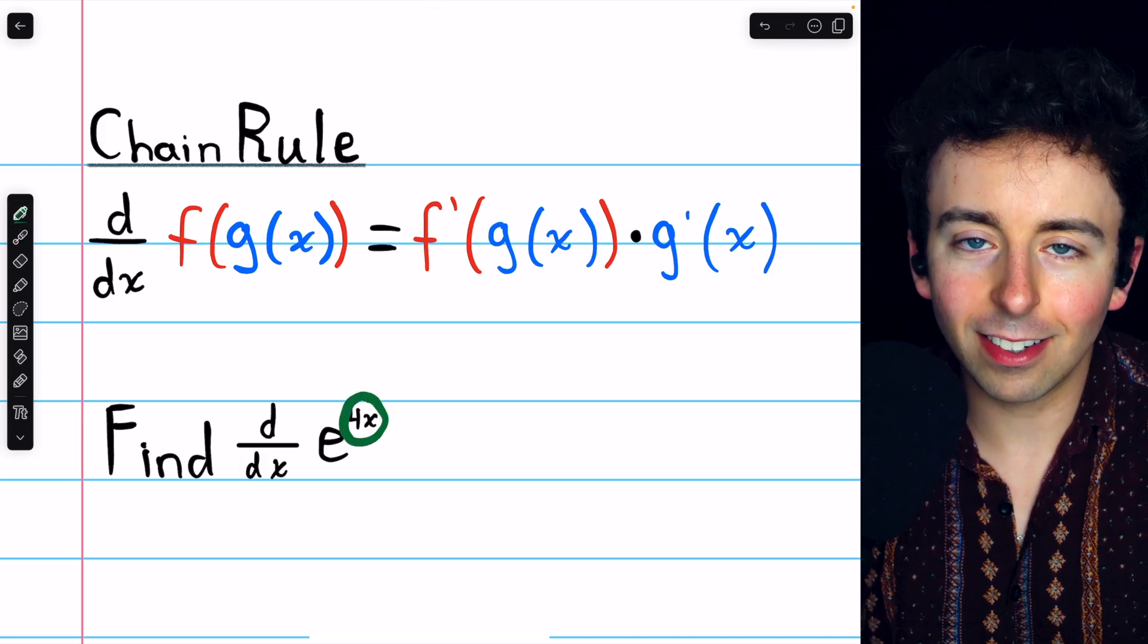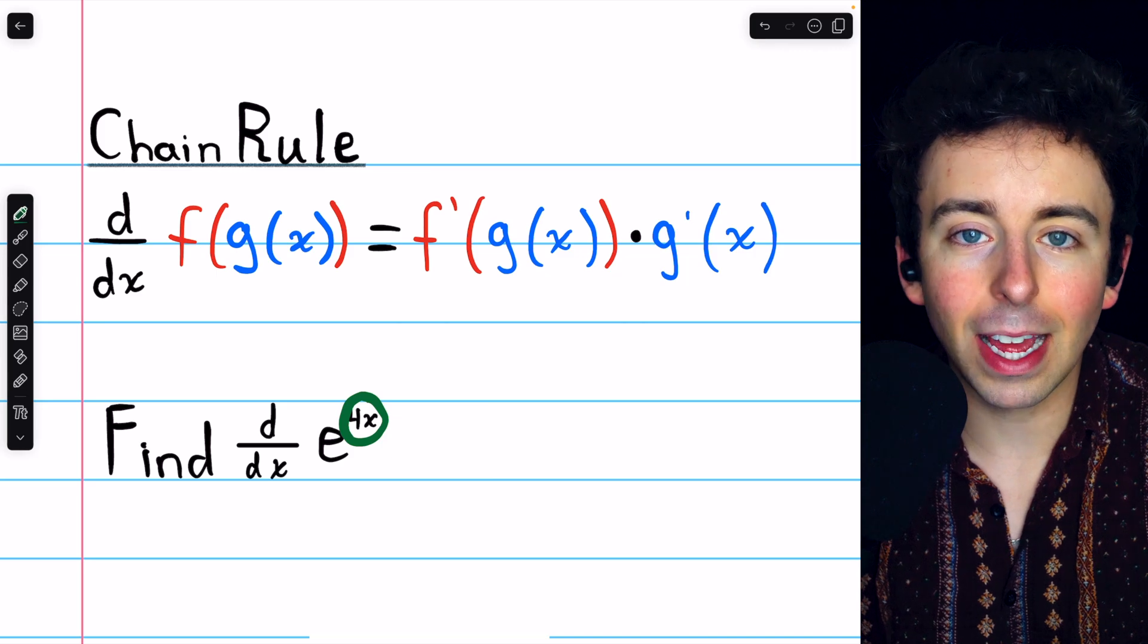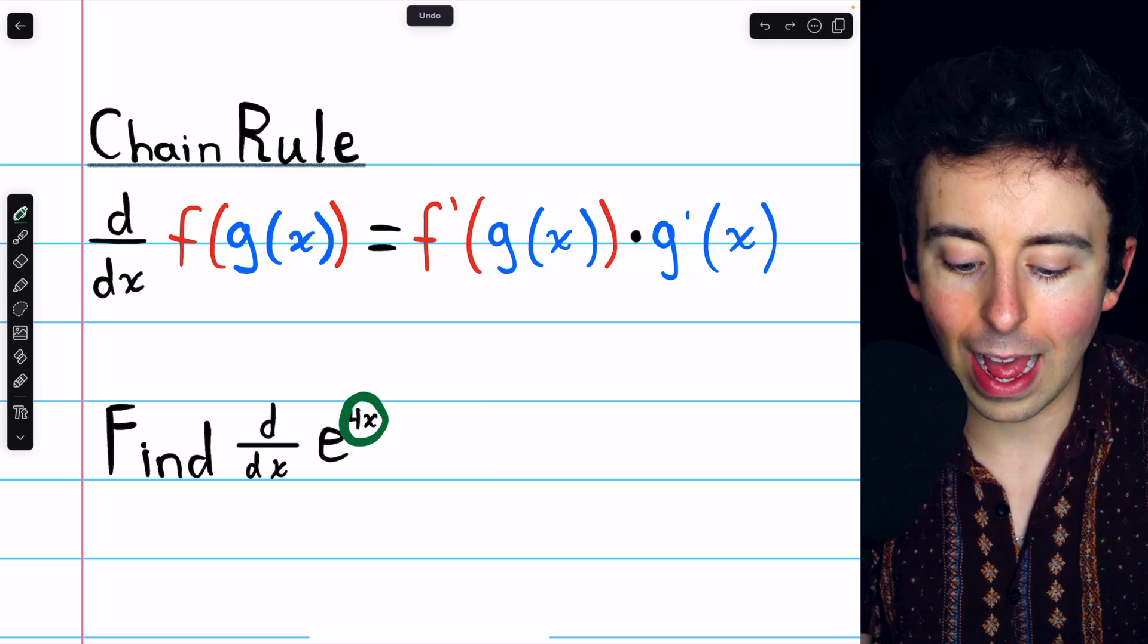In this case, it's pretty clear that 4x is inside the exponential, so that is our g, 4x.